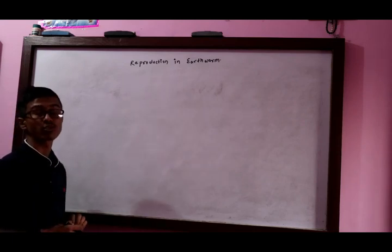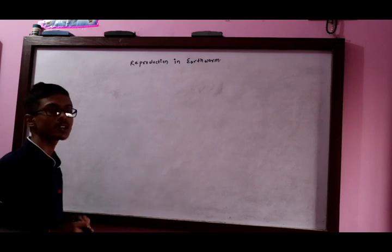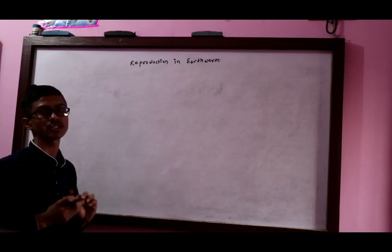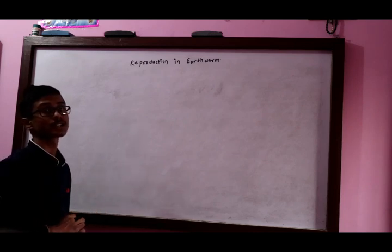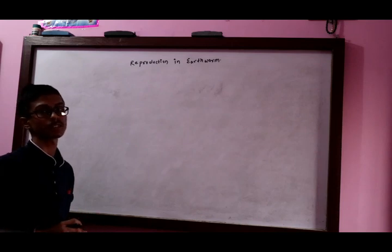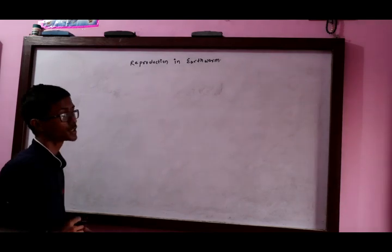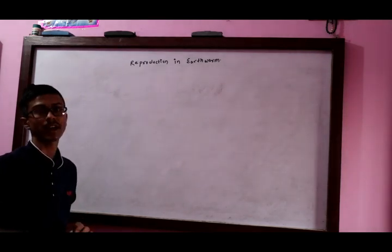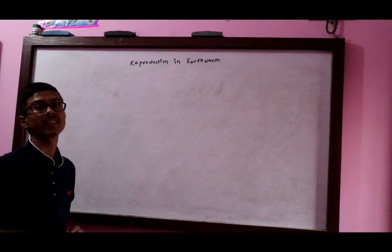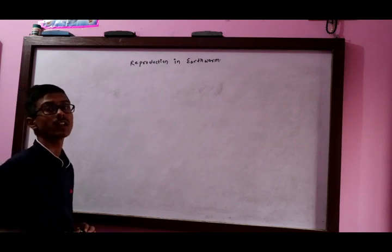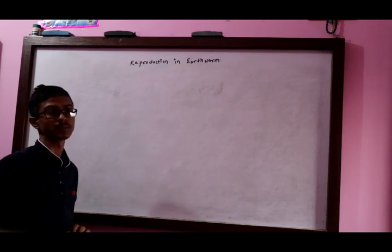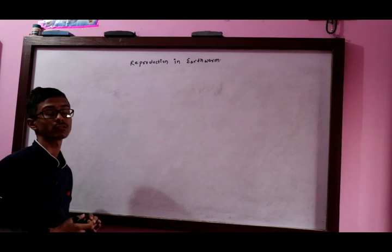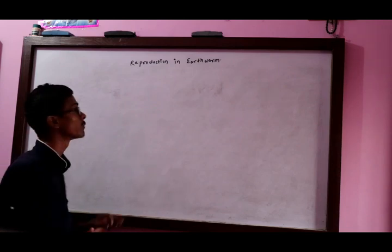It is called Protandrous nature. It is called self-pollination, self-fertilization. It is called Protandrous nature, where male sex cells develop earlier than that of female sex cells.